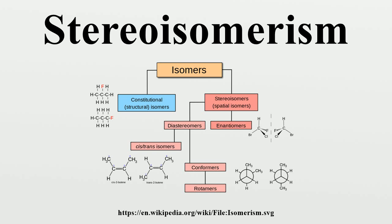Conformers: Conformational isomerism is a form of isomerism that describes molecules with the same structural formula but different shapes, due to rotations about one or more bonds. Different conformations can have different energies, can usually interconvert, and are very rarely isolatable. For example, cyclohexane can exist in a variety of different conformations including a chair conformation and a boat conformation, but for cyclohexane itself, these can never be separated. The boat conformation represents the energy maximum on a conformational itinerary between the two equivalent chair forms.